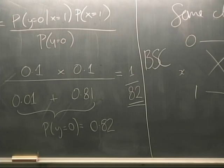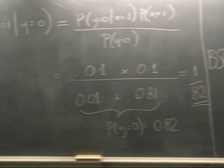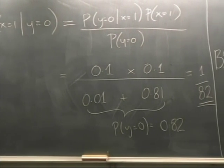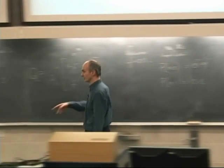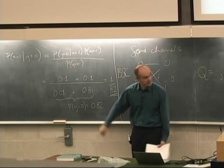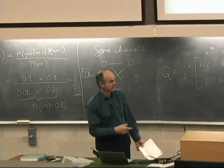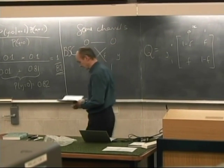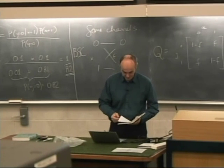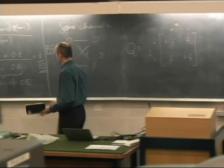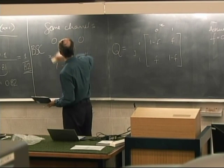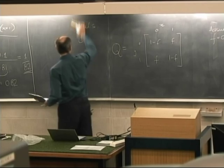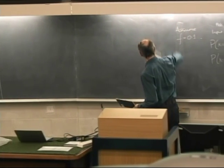Along the way we've worked out the probability of getting each output: P(Y=1) = 0.18 and P(Y=0) = 0.82. Notice those two sum to 1 — as they must. That's a sanity check you can apply. If you see a zero coming out, it's very unlikely the input was a one.